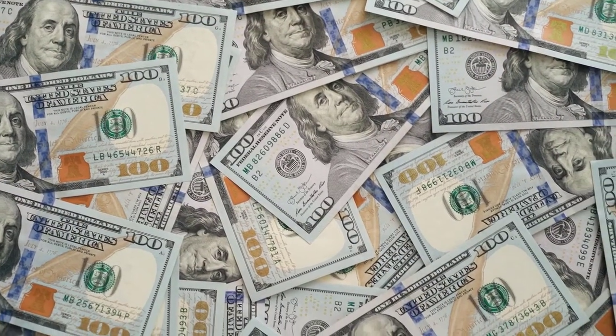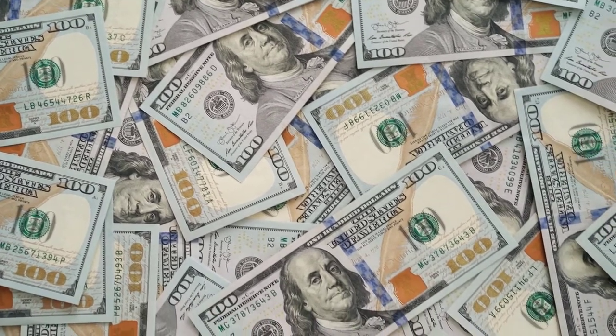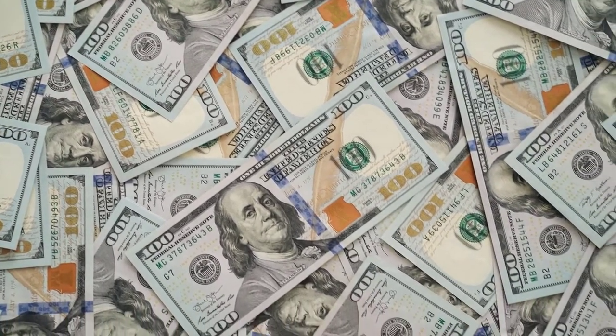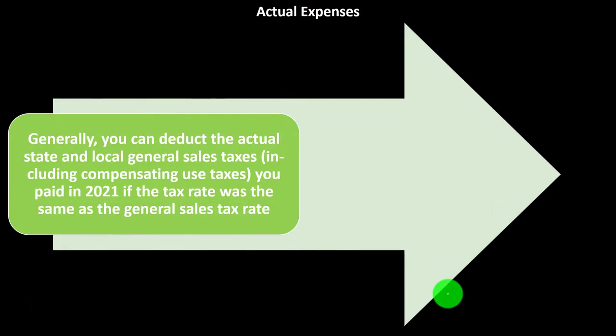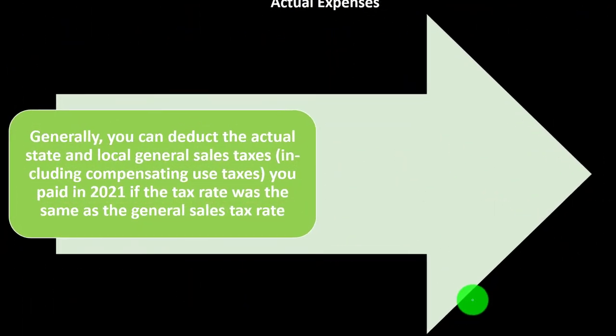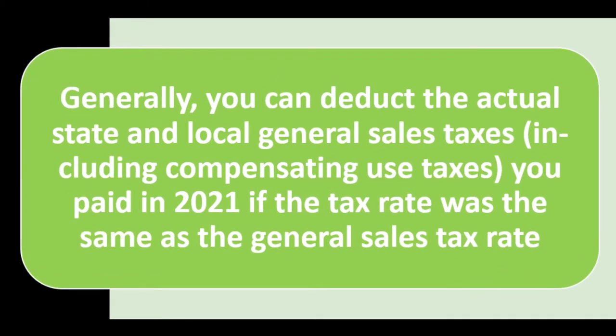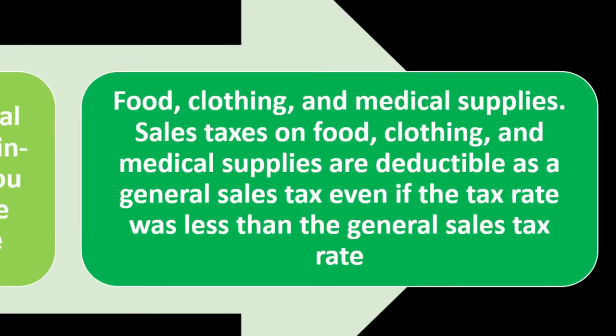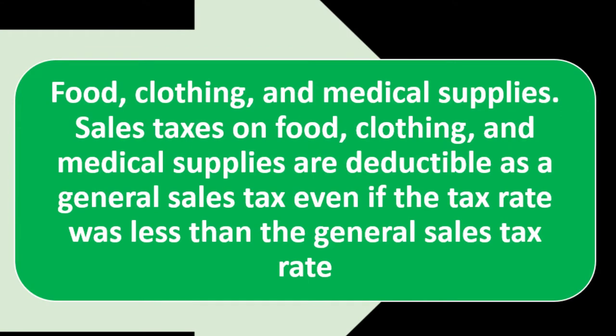The sales tax tables are the easier way to go, but you can use actual expenses — which might be more applicable if you purchased something large, which could distort results from the standard sales tax you'd get from the tables, depending on the area and income level. For actual expenses, you can generally deduct the actual state and local general sales tax, including compensating use taxes paid in 2021. If the tax rate was the same as the general sales tax rate, food, clothing, and medical supplies sales tax are deductible as a general sales tax.